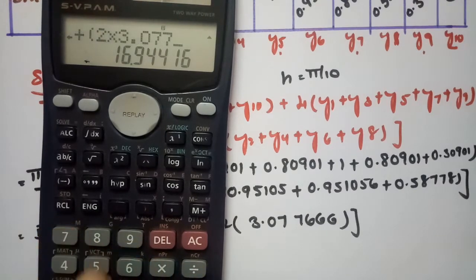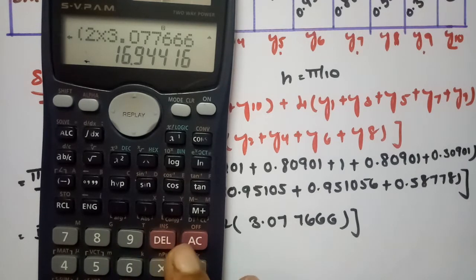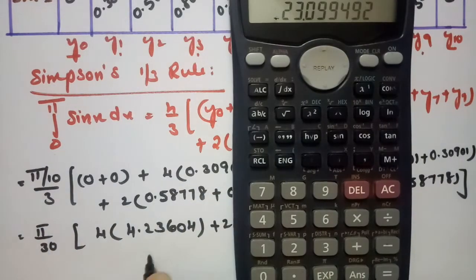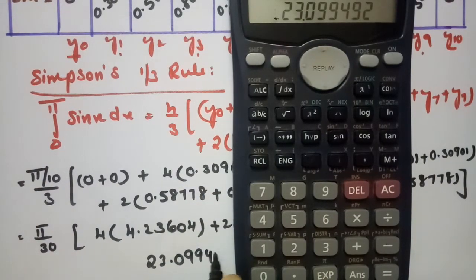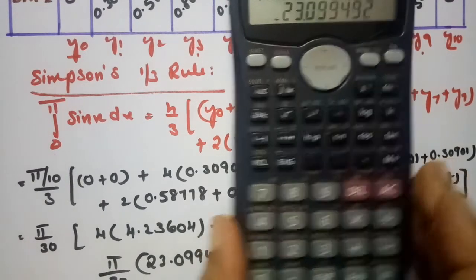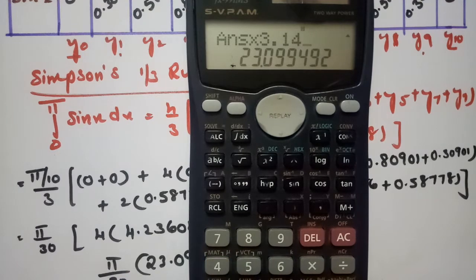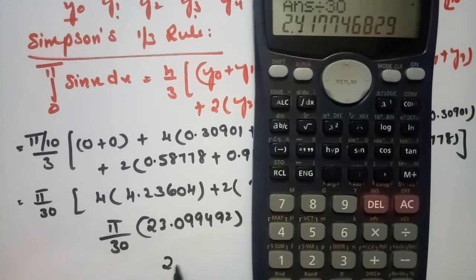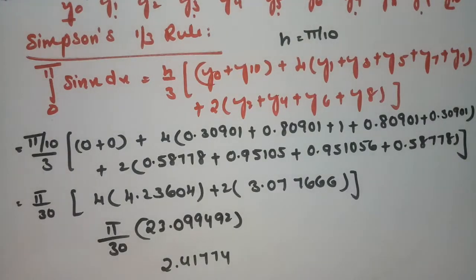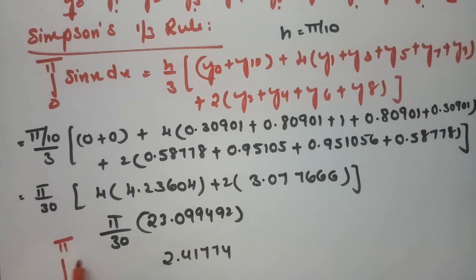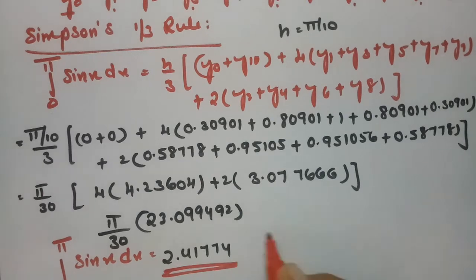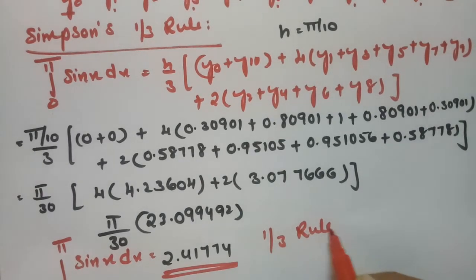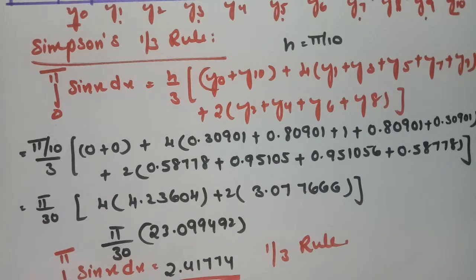So the result is (π/30) × [4 × 4.23604 + 2 × 3.07766] = (π/30) × 23.0949 ≈ 2.41774. According to Simpson's 1/3 rule, the value of the integral 0 to π of sin x dx is approximately 2.41.